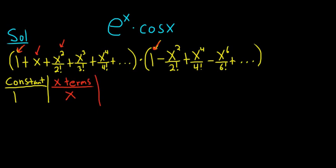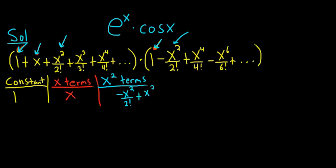Now we go to the x squared terms. Can we use the 1? Yes — we can multiply it by negative x squared over 2 factorial, giving us an x squared term. Can we use the x squared over 2 factorial? Yes — multiplied by 1 from the cosine series, that gives plus x squared over 2 factorial. But look, they cancel and we get 0. So we have no x squared term. Can we use the x cubed? No. So we're done with x squared.